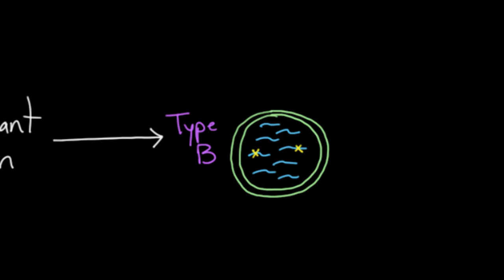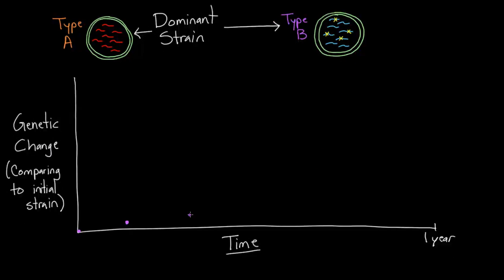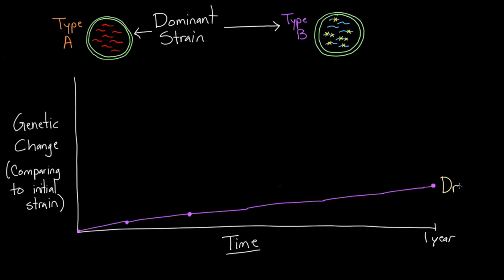Visiting again sometime later, a couple more changes have happened. So the type B virus is looking slightly different from how it was at the start. Mutations keep piling up, and you get a staggered line going all the way to the end of the year. By year's end, there are a few mutations visible — it's a little different than when you started. We'd call this process genetic drift, the normal process that happens with many viruses and bacteria, since all viruses make mistakes when they replicate.